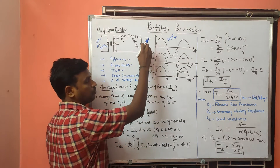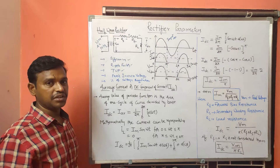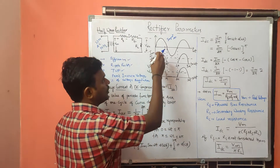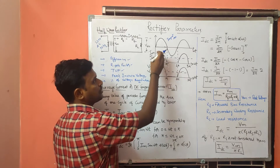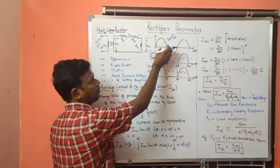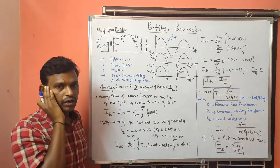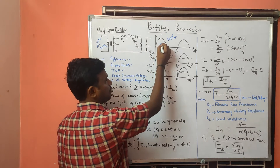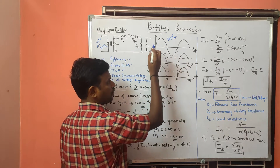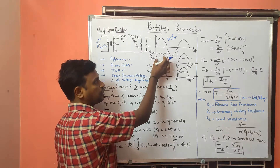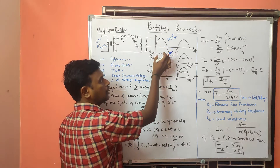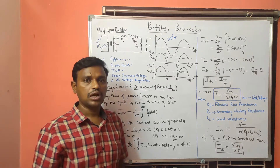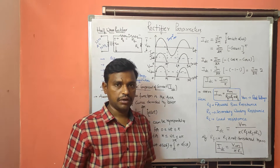VDC is the DC output voltage we obtain. We have already seen the half-wave rectifier output waveforms. The positive half-cycle gives an output and the negative half-cycle gives no output in a half-wave rectifier.